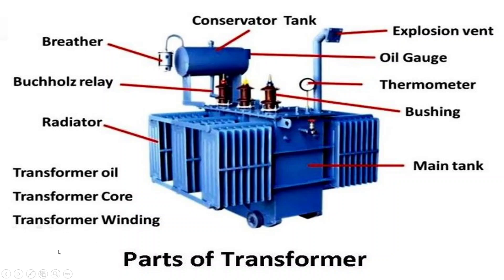Next, we have the transformer windings. The windings are coils of conductive material, usually made of copper or aluminum, through which electrical current flows. There are primary and secondary windings in the transformer. The windings are critical for the process of electromagnetic induction, which allows voltage transformation.